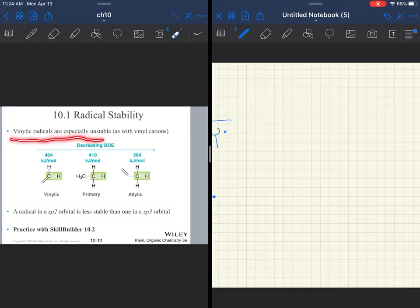The more resonant structures you can draw, the more stable that radical will be. Radicals are very reactive, so anything that can stabilize them will make them less reactive. That will be important when we talk about things like radical inhibitors a little bit later.